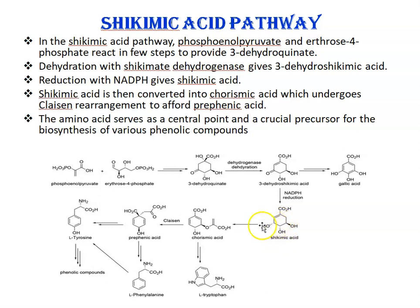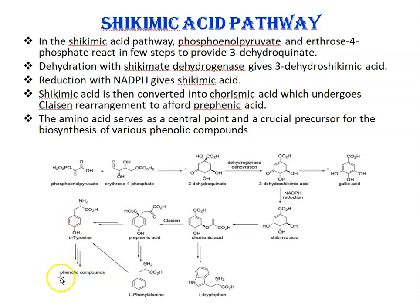This shikimic acid is then converted into chorismic acid. Chorismic acid undergoes a Claisen rearrangement to form prephenic acid. Prephenic acid is then converted in several steps into tyrosine. This amino acid serves as a central point and a crucial precursor for the biosynthesis of various phenolic compounds. This completes the shikimic acid pathway for the formation of phenolic compounds.